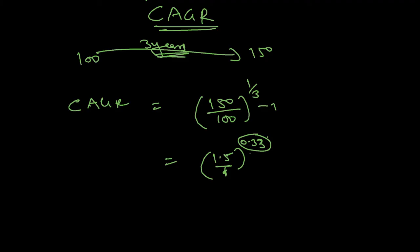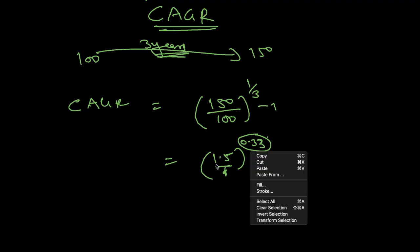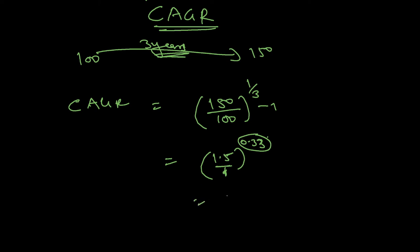1.5 divided by 1 to the power 0.333, so what I will get is 1.1446. So that means each year, 1 will grow to 1.1446. So I will do minus 1, that's the reason.